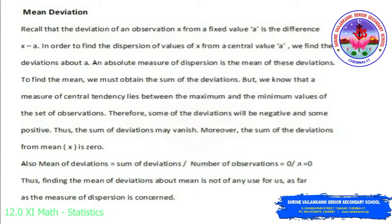Let us see what is mean deviation. The deviation of an observation x from a fixed value a is the difference x minus a. In order to find the dispersion of values of x from a central value a, we find the deviations about a. An absolute measure of dispersion is the mean of these deviations. To find the mean we must obtain the sum of the deviations, but some deviations will be negative and some will be positive, so the sum of deviations may vanish. Moreover, the sum of deviations from mean x-bar is 0. Mean of deviation equals sum of deviations by number of observations, which is 0 by n, which equals 0. Thus finding the mean of deviations about mean is not of any use as far as the measure of dispersion is concerned.